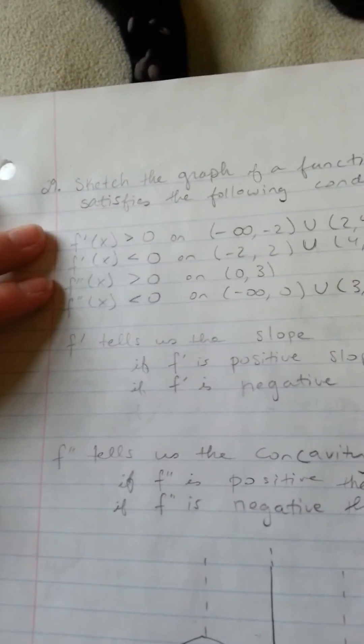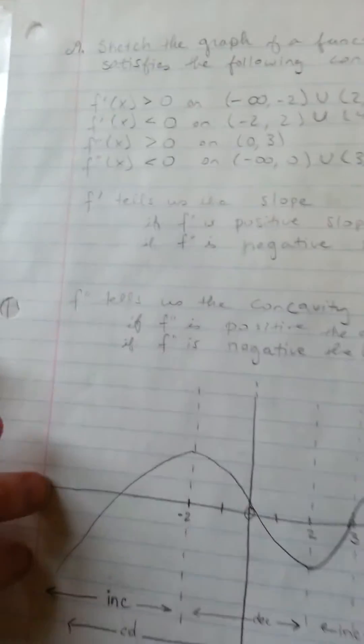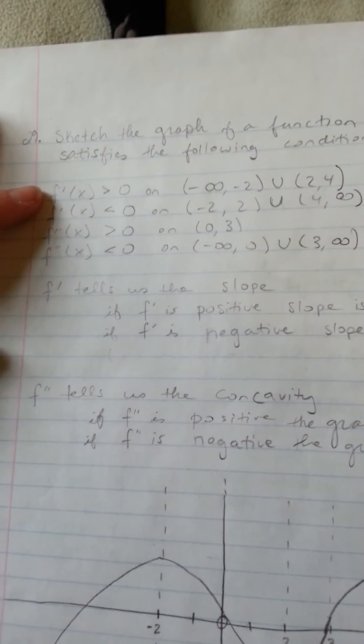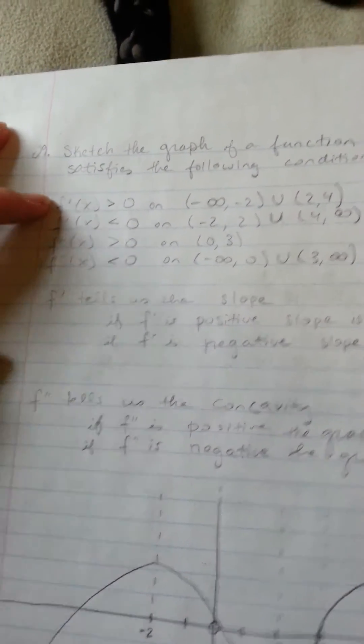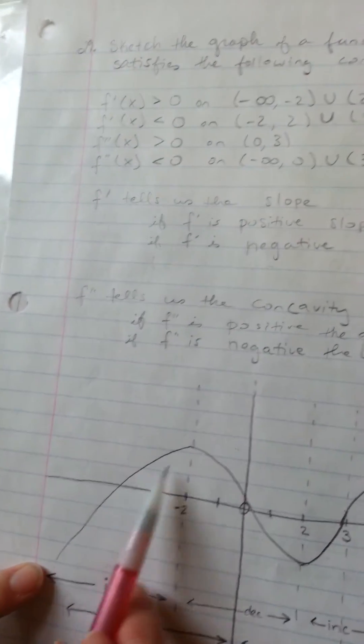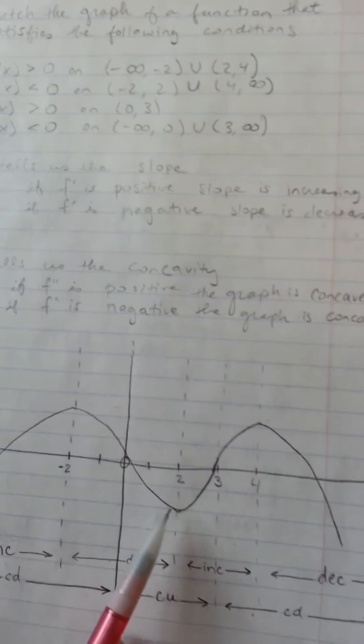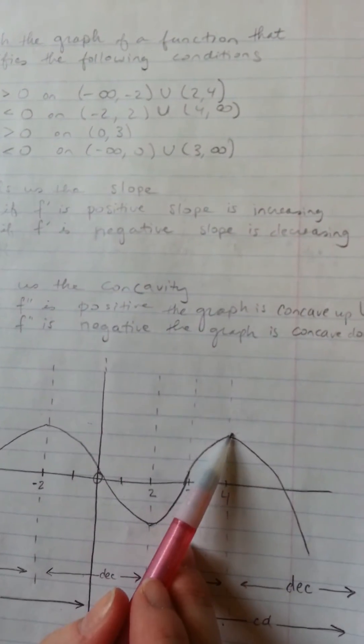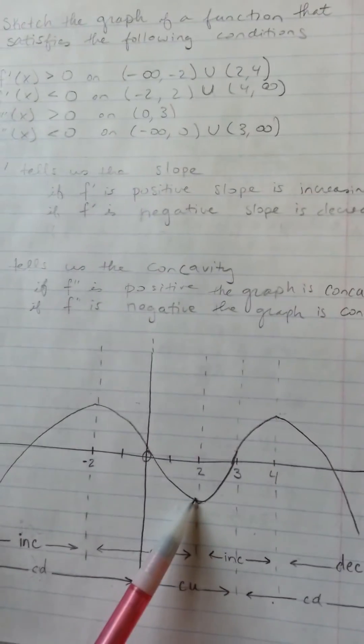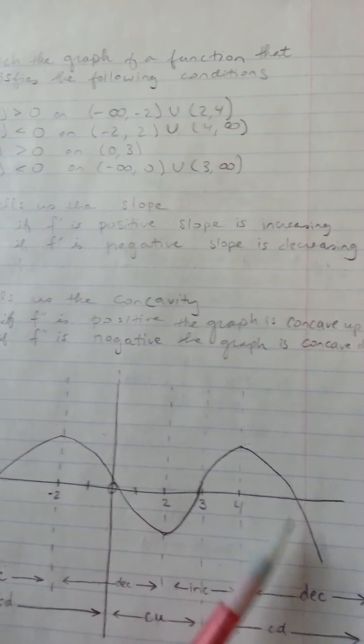So looking at our original conditions again, and then looking at the graph we drew, we can see that the slope is going to be increasing on negative infinity to negative 2, and also from 2 to 4. We can see that the slope is decreasing from negative 2 to 2, and from 4 to infinity.